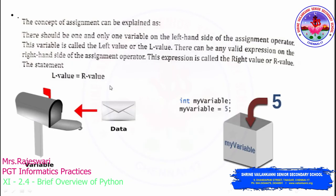L-value refers to the left-hand side of the assignment operator and R-value to the right-hand side. On the left-hand side you can have only one variable, but on the right-hand side you can have any valid expression or value. For example, x = a + b: x is the l-value and a + b is the expression on the right-hand side.